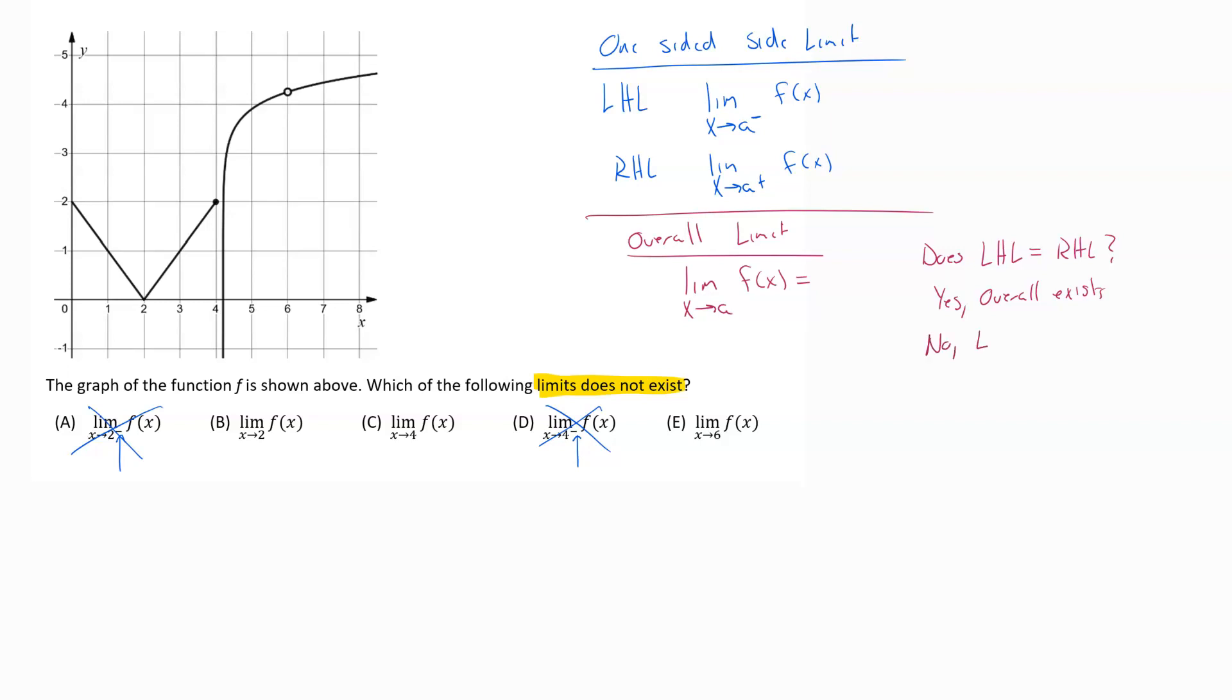If the answer is no, if the left-hand limit doesn't equal the right-hand limit, that's when we're going to run into the fact that the overall limit DNE, does not exist. So for this specific problem because we want to know when it does not exist, what we're really looking for is this scenario here where the left-hand limit doesn't equal the right-hand limit.